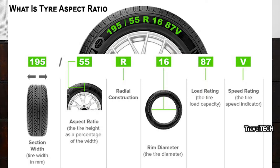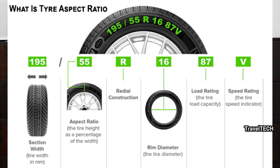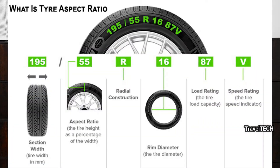The letter R indicates that it is a radial construction tire. The next number — in this example, 16 — indicates the rim diameter in inches, so R16 means it is a 16-inch radial tire. As the rim size increases, the number increases: 17, 18, and so on. The number 87 represents the load index — that is, the load capacity of the tire, or how much load it can take. Generally, the higher the number, the higher the load index.